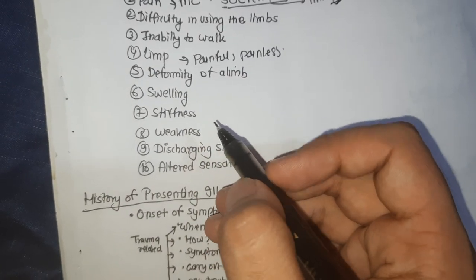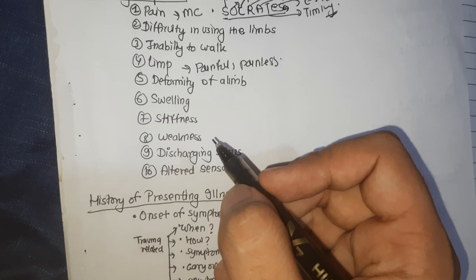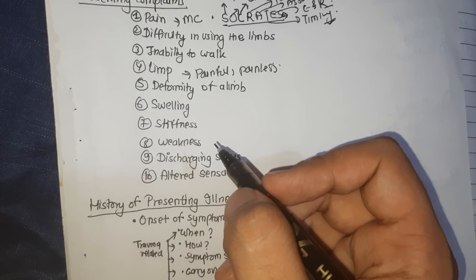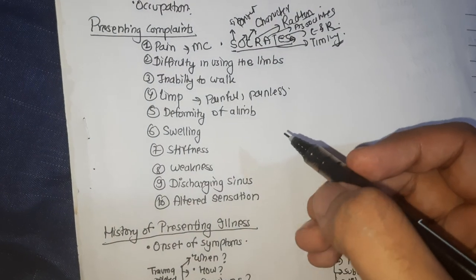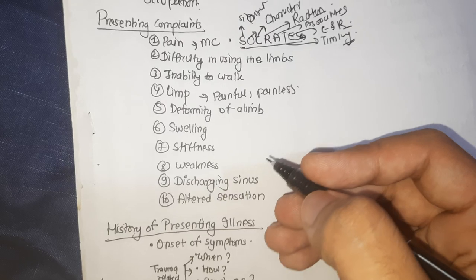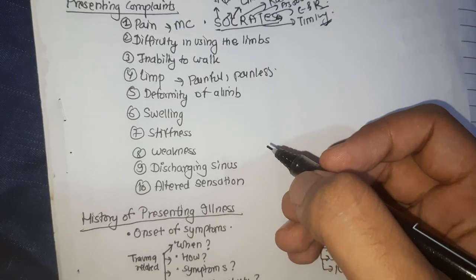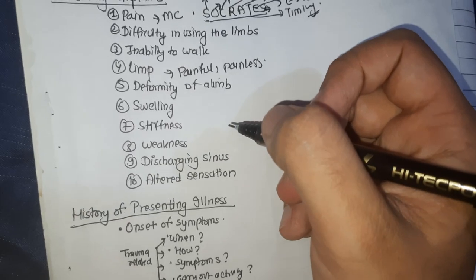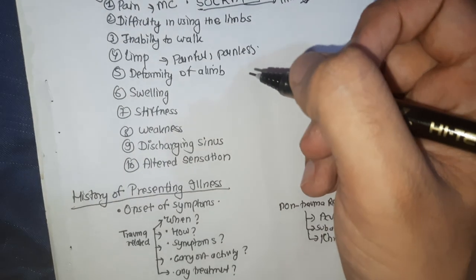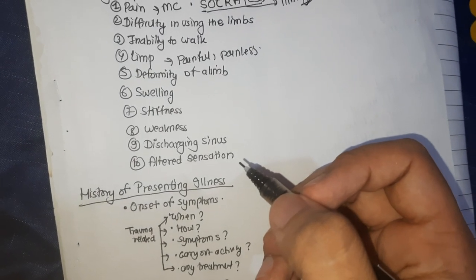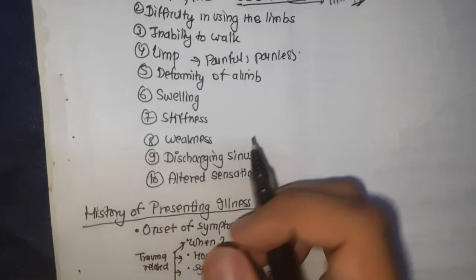Stiffness is a symptom of joint involvement. In early stages, stiffness occurs due to protective muscle spasm around the joint — nature's way of avoiding movement of a painful joint. In late stages, the joint becomes stiff due to intra-articular or extra-articular changes. In advanced stages, severe limitation of joint movement is called ankylosis. Intra-articular causes of ankylosis include tuberculosis, septic arthritis, and viral arthritis. Extra-articular causes include myositis, arthrogryposis multiplex congenita, bone contracture, and scleroderma. In inflammatory diseases like rheumatoid arthritis and ankylosing spondylitis, stiffness increases after rest but improves with activity.